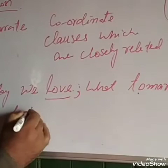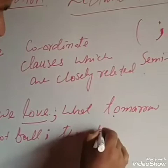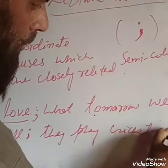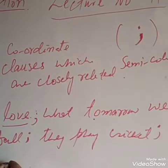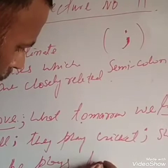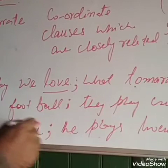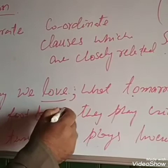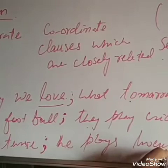For example: 'We play football; they play cricket; she plays tennis; he plays hockey.' Each of these is a clause with one subject and one predicate. 'We play football' is separated by a semicolon. 'They play cricket' is separated by this. 'She plays tennis' is separated by a semicolon. 'He plays hockey' ends with a full stop.